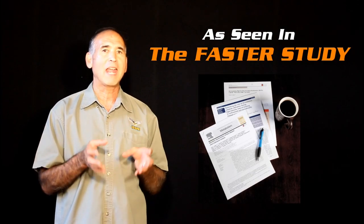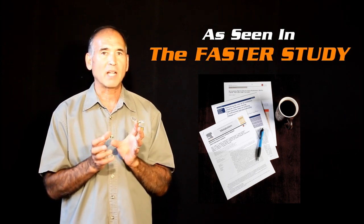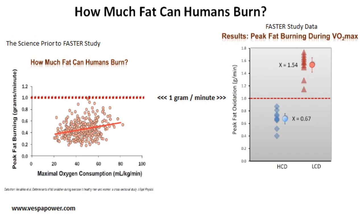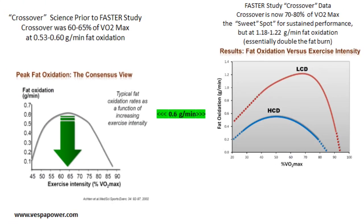Humans actually are able to burn a lot more fat than the previous science suggested and burn a lot more fat at a much higher intensity level than previously thought. We're talking now of athletes being able to burn rates of fat 1.4, 1.5, 1.79 grams of fat at 70 to 80 percent of their VO2 max.